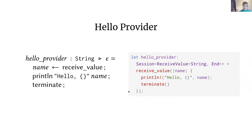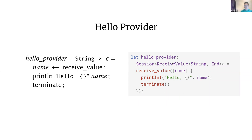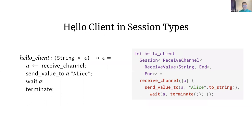If we actually violate the protocols we specified — for example, just terminating directly without using the received value — we get a type error when we try to build our Rust program. This results in a compile-time error. The exact error message isn't important now, but the key point is that protocol violations are caught at compile time.